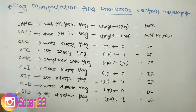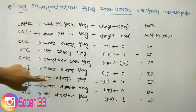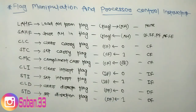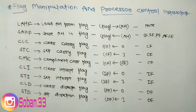The last four instructions are CLI, STI, CLD, and STD. CLI clears the interrupt flag (sets it to 0), STI sets the interrupt flag (sets it to 1), CLD clears the direction flag (sets it to 0), and STD sets the direction flag (sets it to 1). This was all about Flag Manipulation Instructions of the 8086 microprocessor. Hope you understood — please like and subscribe, and message me on Instagram if you have any queries.